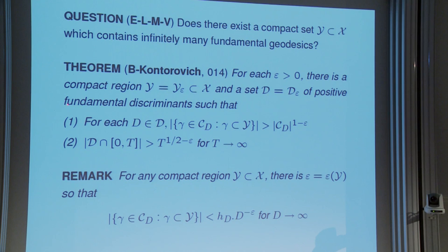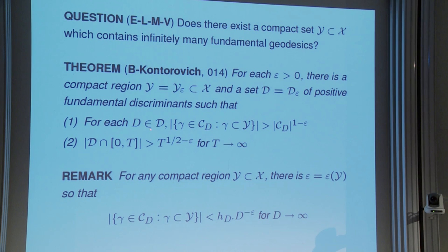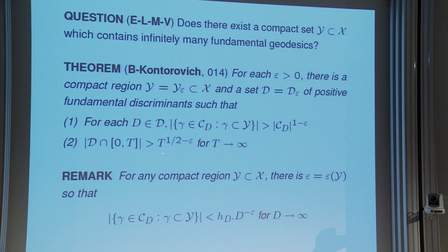Half of what we proved is in a posted paper; there is another paper in the making. The first paper tells us the answer is yes. For any epsilon, there is a compact region Y in the modular surface and a set D of positive fundamental discriminants with the following properties. First, for d in D, if we look at the fundamental geodesics gamma which stay inside that region Y, we have as many of them as the class group to the power 1 minus epsilon. Second, the set D is quite large: the number of elements in D less than t is going to be t to the half minus epsilon. These two statements are essentially best possible.